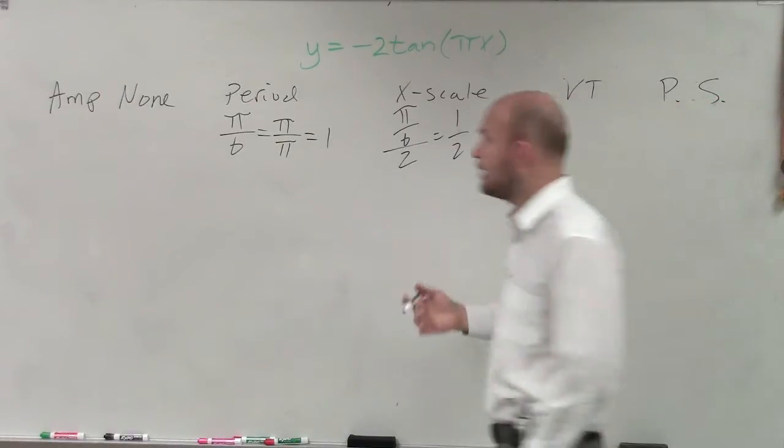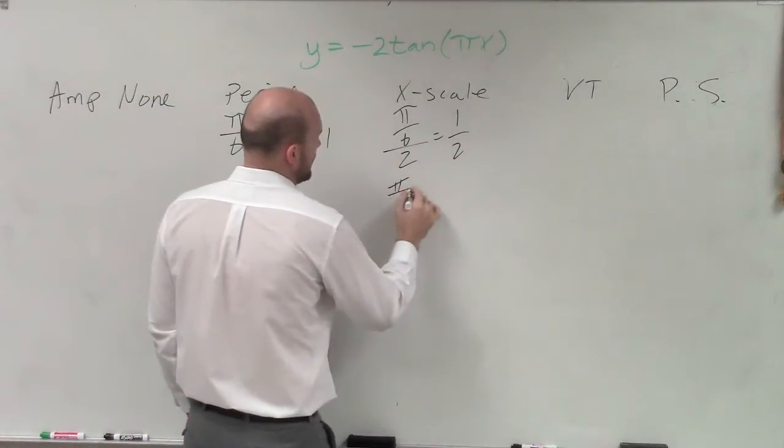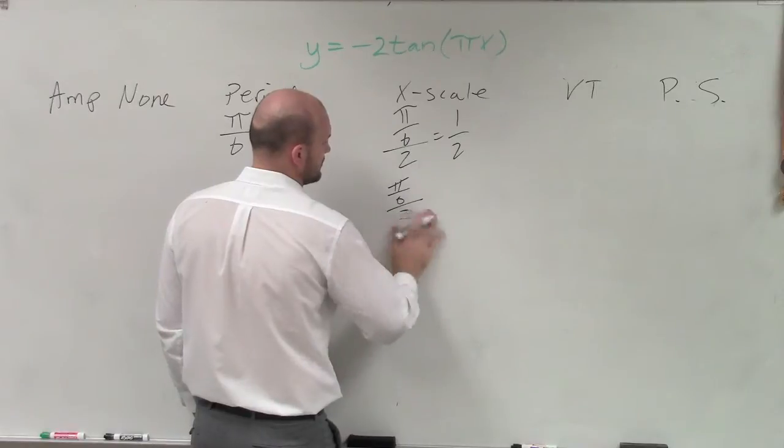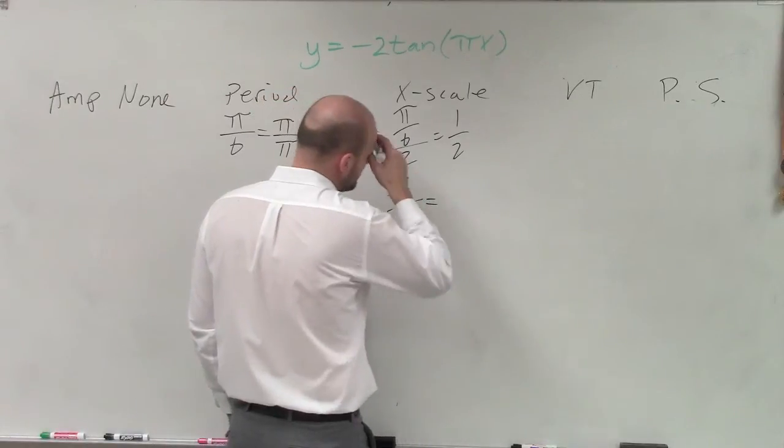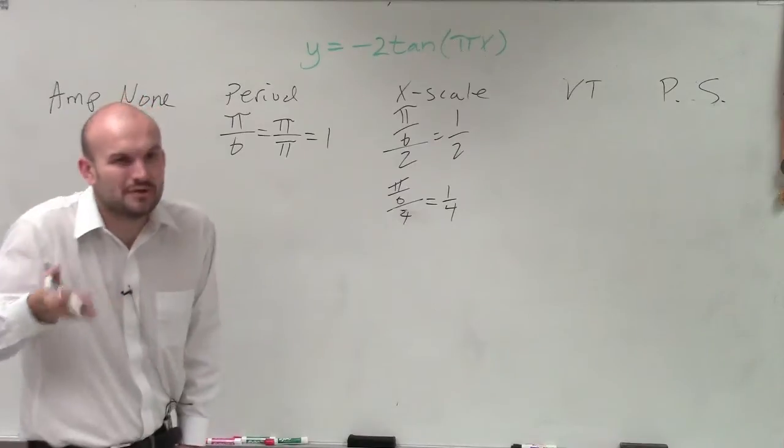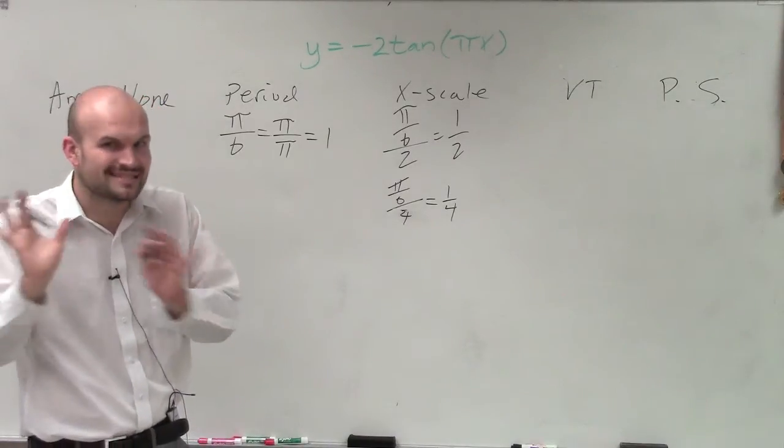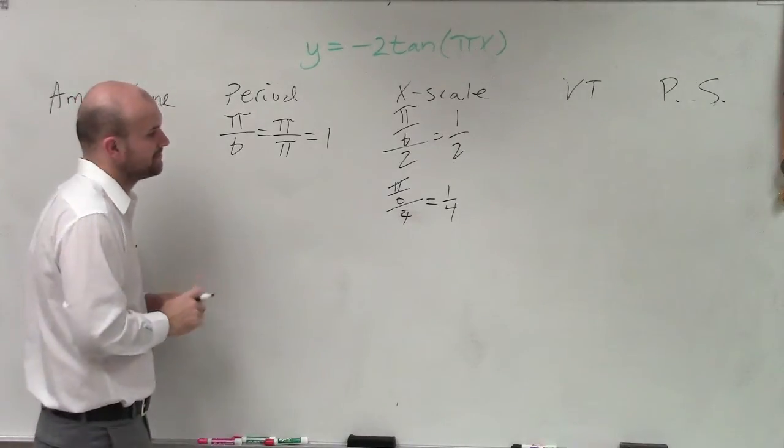Now, it will be helpful for me to show you this. If you want to do the old x scale, that's 1 fourth. That's just including extra tick marks. And I'll tell you what I'm talking about for this in a second.